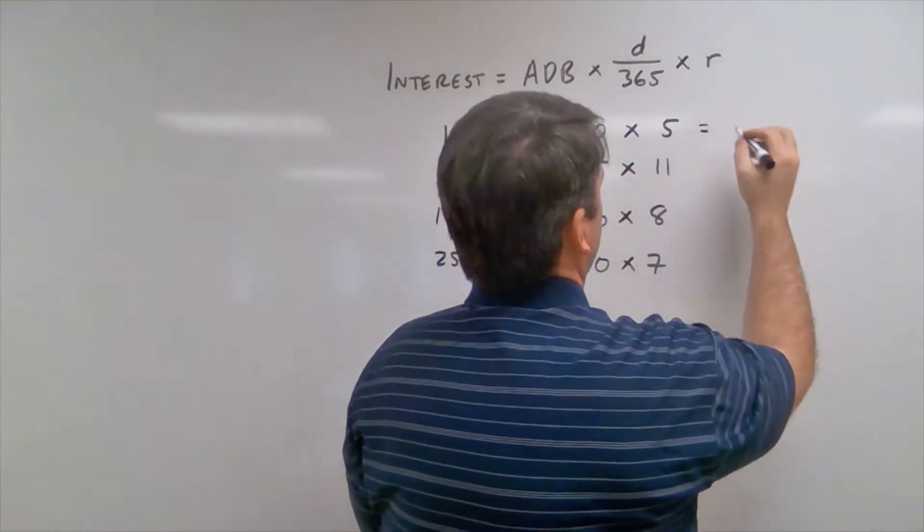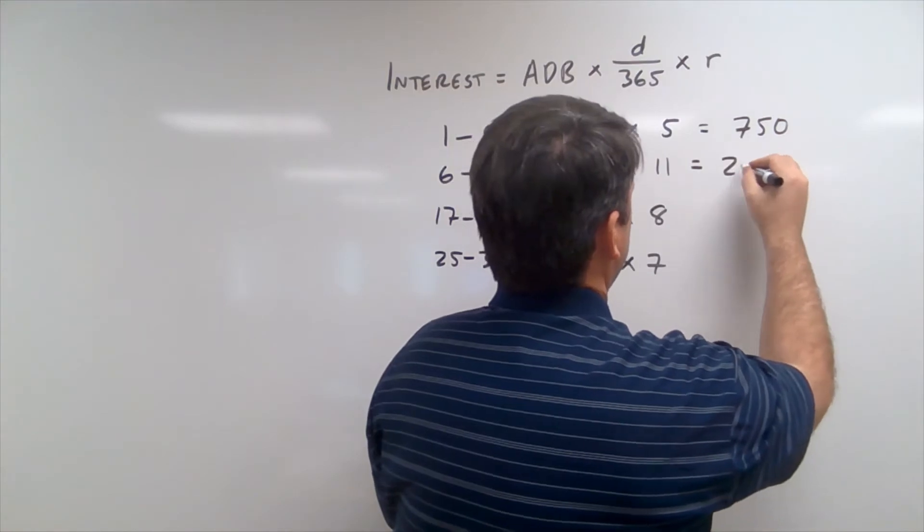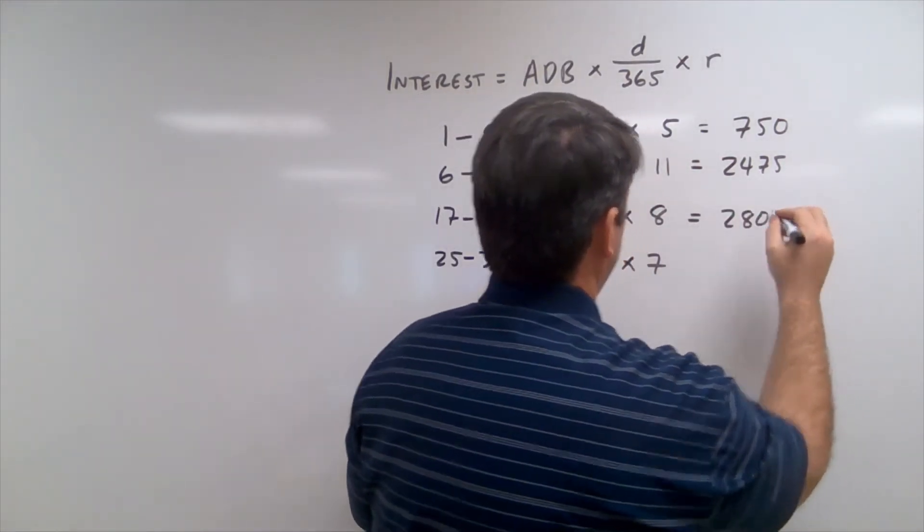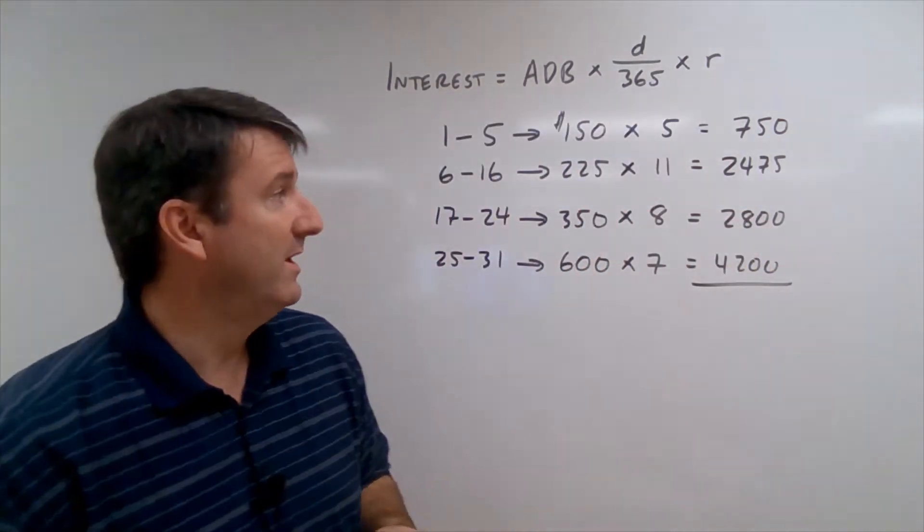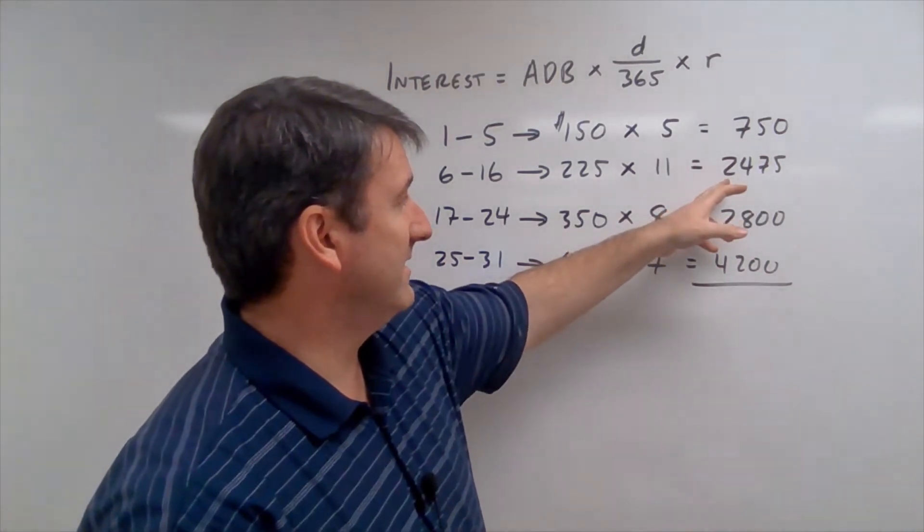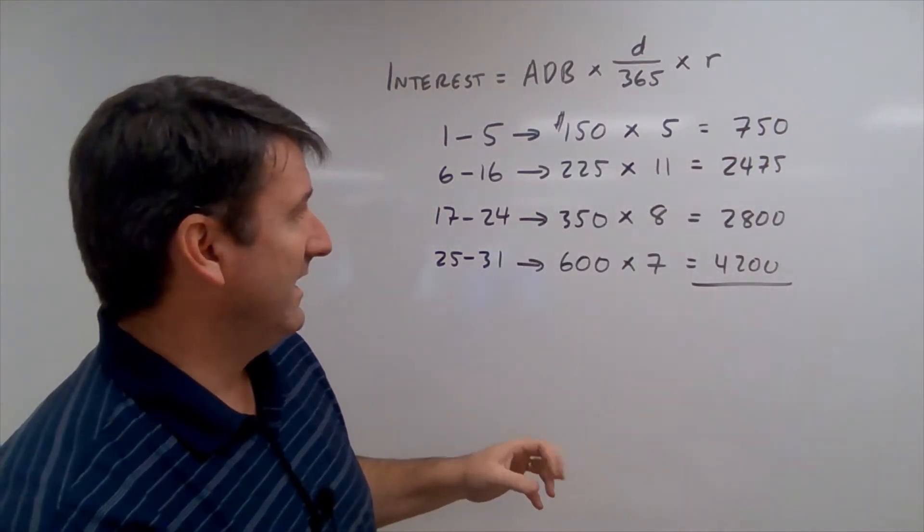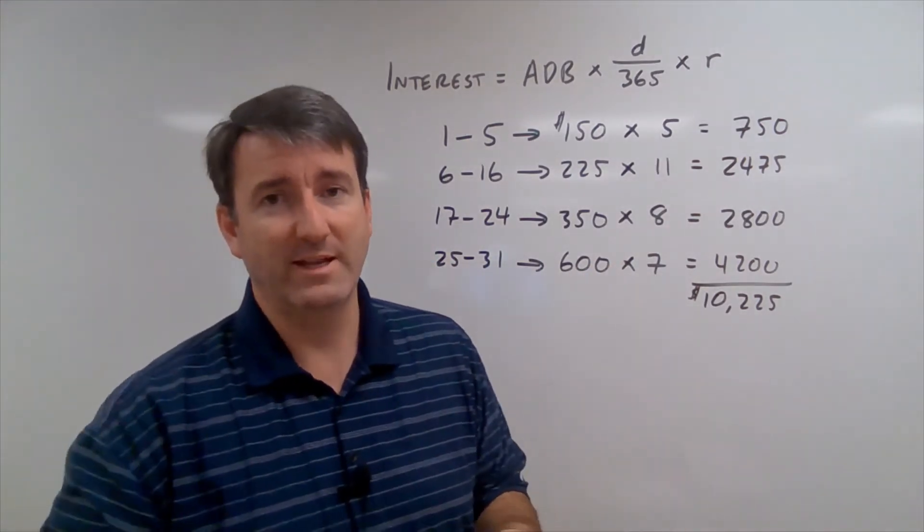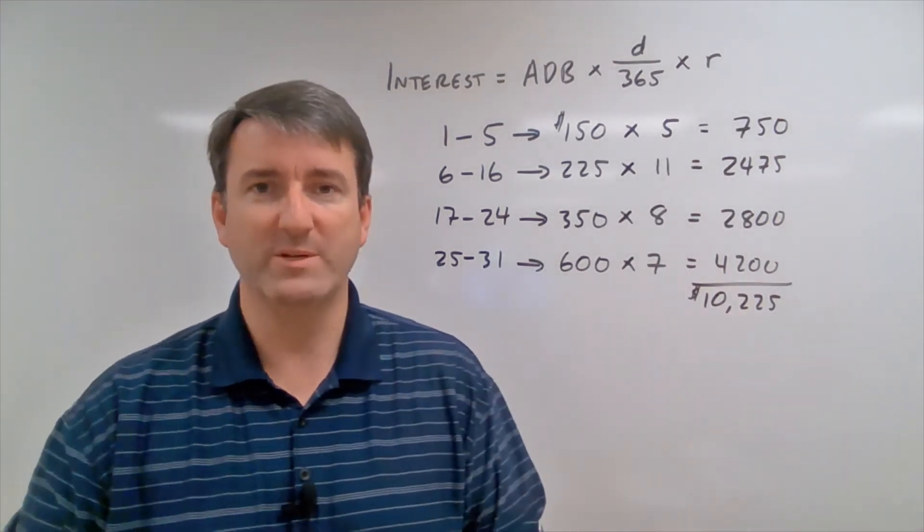So 150 times 5 is $750. 225 times 11 is $2,475. 350 times 8 is going to be $2,800. 600 times 7 is $4,200. And then we'll add up all of these amounts. So $4,200 plus $2,800 is $7,000, plus $7,000, $8,000, $9,000, $10,225. So $10,225 is the total of all of the daily balances throughout the month. And then to get the average daily balance, we're going to divide that by 31, which ends up being about $330.